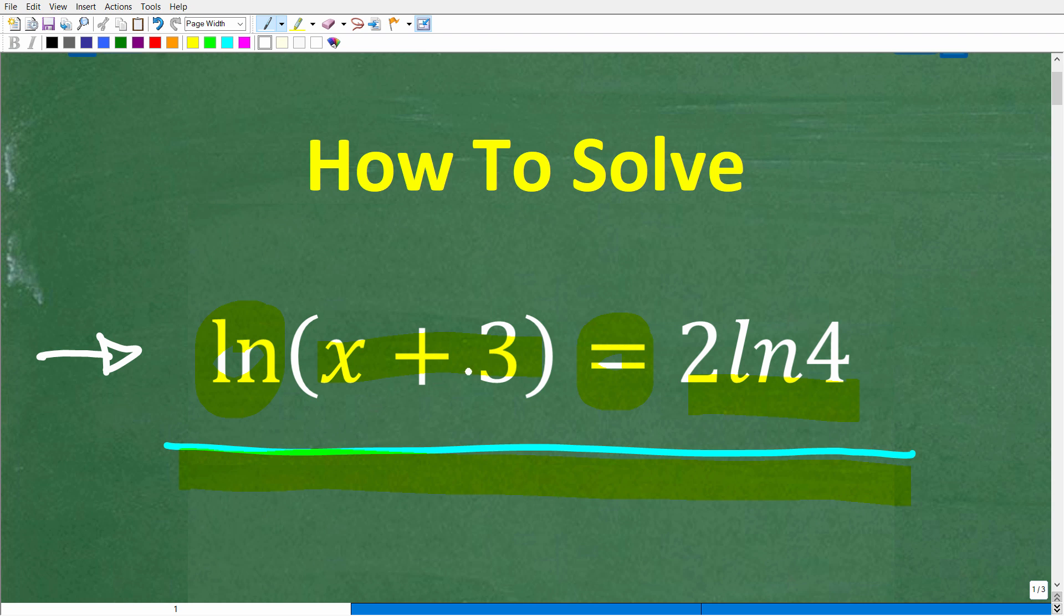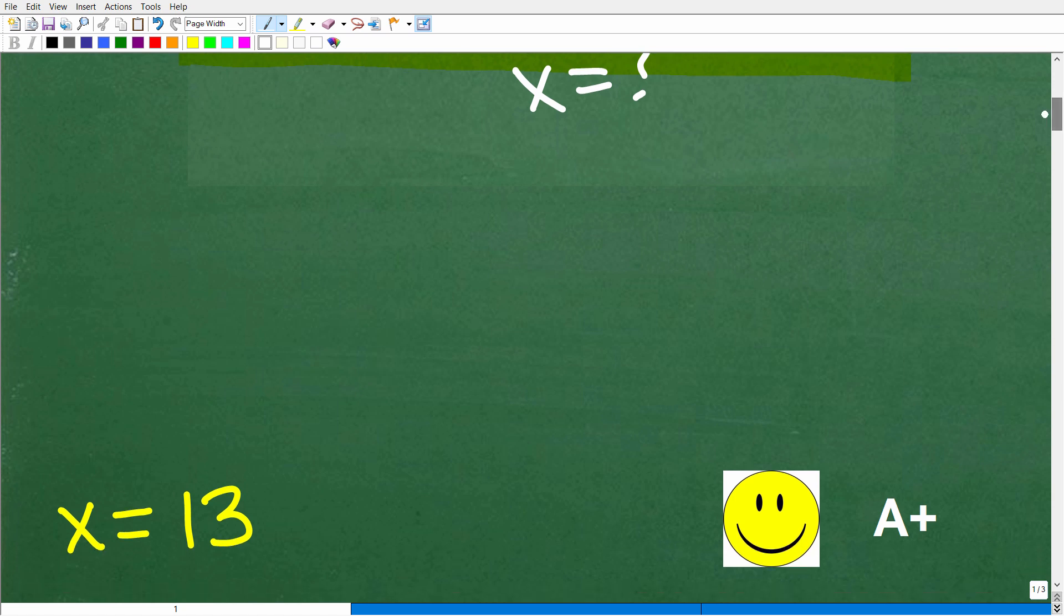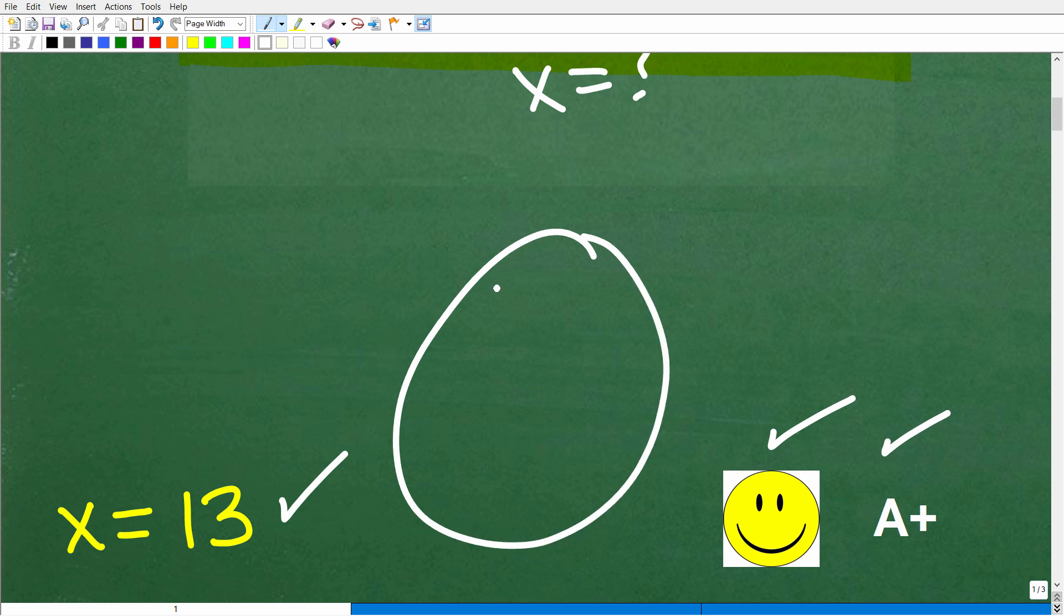Okay, so ln(x + 3) = 2ln4. What is x equal to? Well, the correct answer is the following: x = 13. All right, now if you got this right and you did not use a calculator, well you definitely get a happy face and an A+. And if you're like, Mr. YouTube Math Man, I'm a bit confused.